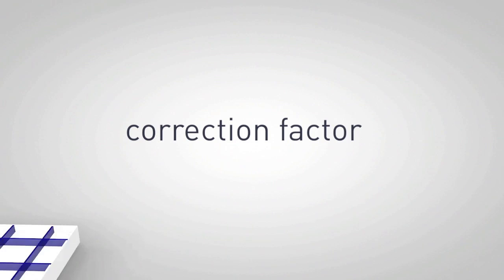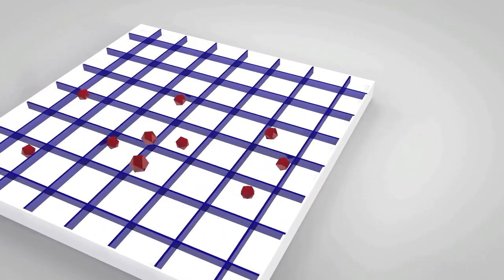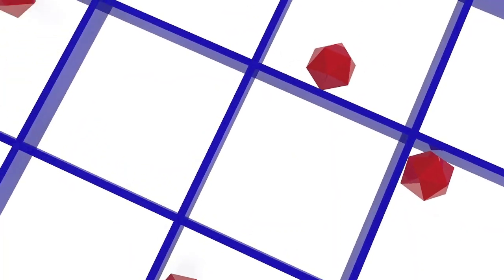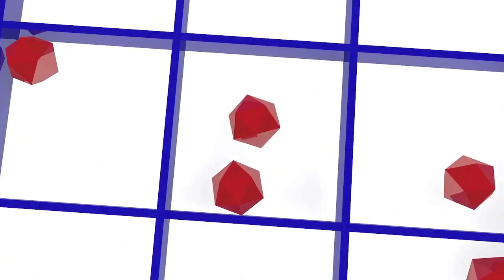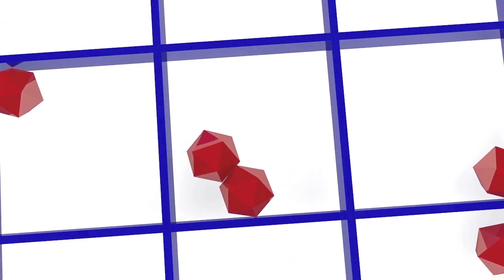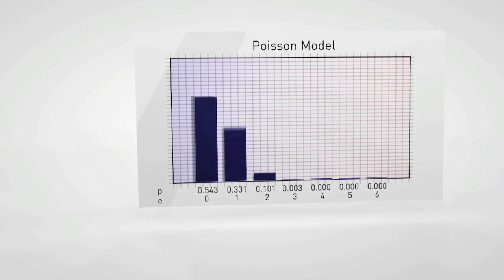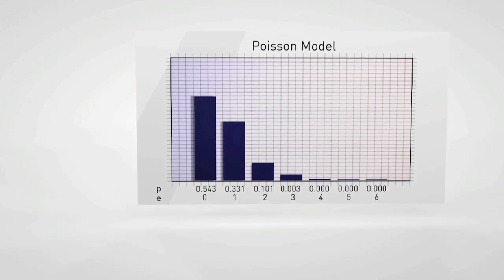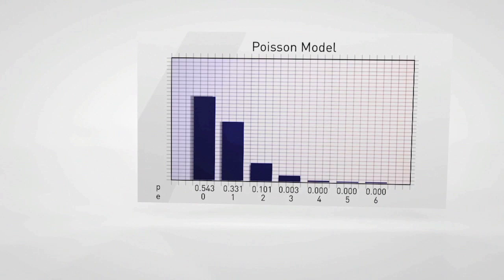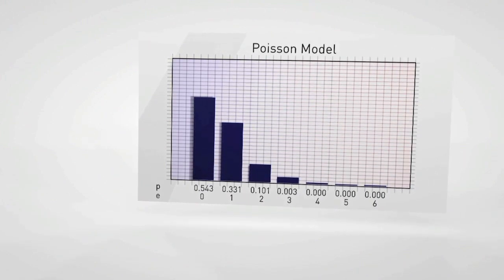Next, since digital PCR relies on random distribution of nucleic acid molecules into thousands of reaction replicates, it is possible to have reactions with more than one molecule. That's why digital PCR software needs to apply Poisson statistics to account for the possibility of getting more than one template molecule in one reaction.